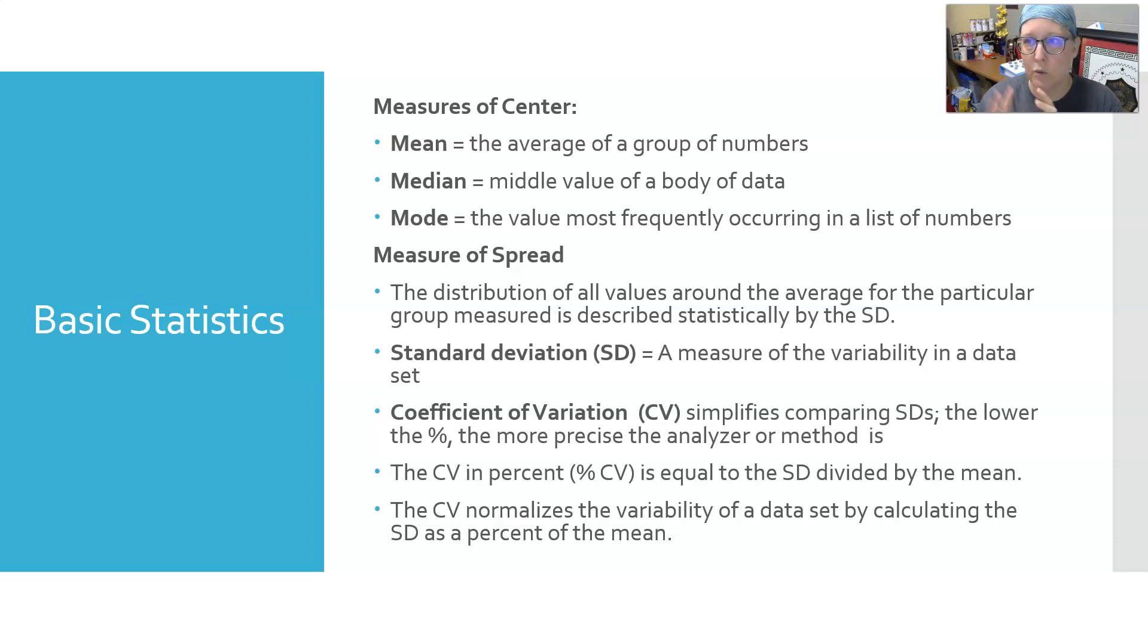The mean is used the most to get the average of a group of numbers and analyze data, but we don't use it by itself. We also use the measure of spread. The distribution of all values around the average for a particular group of data is described statistically by the standard deviation. The standard deviation is a measure of variability in a data set.